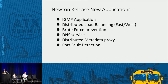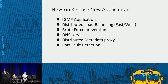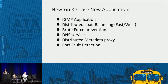Another interesting application currently in development is the distributed metadata proxy. Currently, in the network node, you have a metadata proxy that adds an HTTP header and routes to the Nova metadata server. We're trying to eliminate this service altogether and have it as another distributed service inside Dragonflow. We also have an idea for port fault detection implemented via flow-based port fault detection as a Dragonflow application.